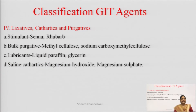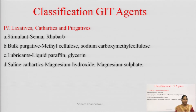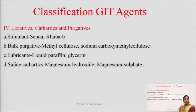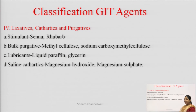Next category is laxatives, cathartics, and purgatives. Ismein sabse pehle jo hai that is stimulant — jo ki stimulant ka kaam karte hain. Sena, rhubarb bhi hamare naturally plants hain jo ki available hote hain — inmen jo active constituents hote hain, woh stimulant ka kaam karte hain. Second is bulk purgative — isme hai methyl cellulose, sodium carboxymethyl cellulose. Next is lubricants — isme hai liquid paraffin, glycerin. Saline cathartics — saline mein hai magnesium hydroxide and magnesium sulfate.